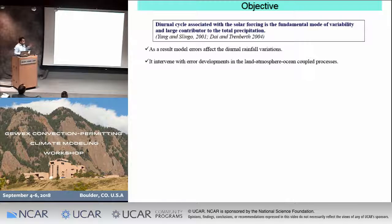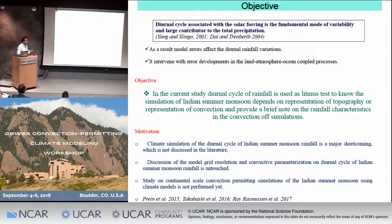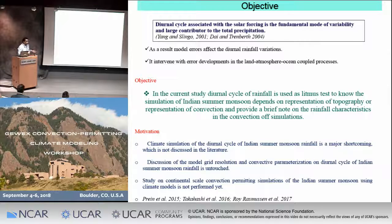My main objective is that because of those two discrepancies — orography representation and missing physical processes — there are errors in model simulation with respect to diurnal rainfall variations. As a result, this interferes with different land-atmosphere and ocean processes, making the entire simulation uncertain and unreliable for simulated rainfall or temperature. My objective is to use the diurnal cycle as a litmus test to check whether the Indian summer monsoon regional climate simulation using the WRF model is better or not, and to understand which plays a larger role: convection representation or topography.